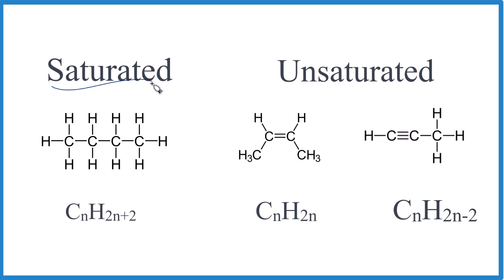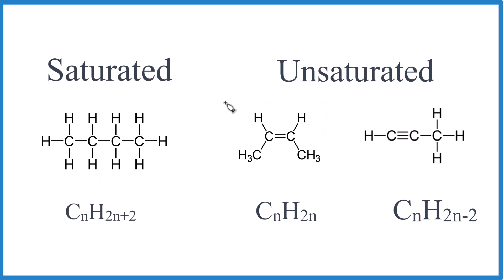Let's take a look at saturated and unsaturated hydrocarbons. What is the big difference between these? When we have a hydrocarbon, it's made up of carbons and hydrogens — that's the case for both. The big difference is when it's saturated, that means each carbon is bonded to four things. There are only single bonds — this carbon here has one, two, three, and then it's bonded to this carbon: four.